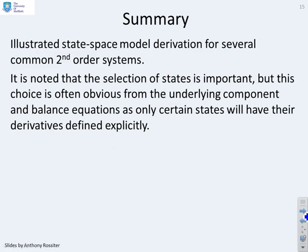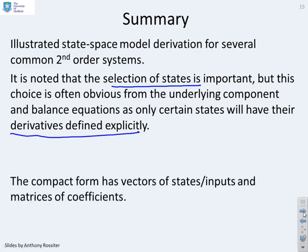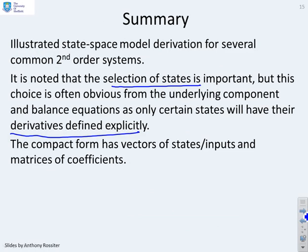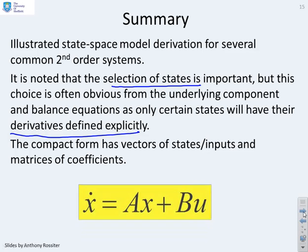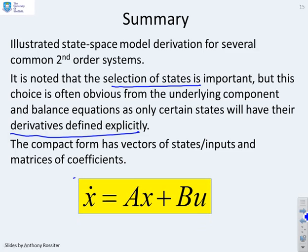So in summary, we've illustrated some state-space model variations for several common second-order systems. It's noted that the selection of the states is important, but this choice is often obvious from the underlying component and balance equations, as only certain states will already have the derivatives defined explicitly. The compact form has vectors of states and inputs and matrices of coefficients. So we go from having a sort of mess of different coefficients and numbers and maybe three or four equations to having a single matrix equation, which takes this form. And the advantage is that now we've only got one simple form to carry around. So if we know how to analyse this form, it's a lot, lot easier to handle.